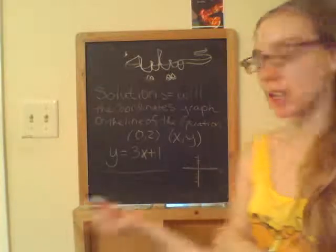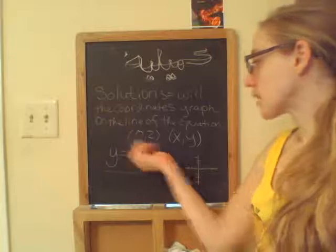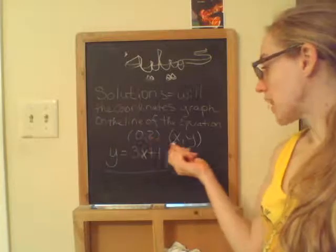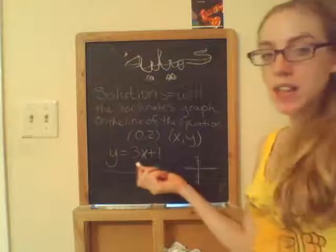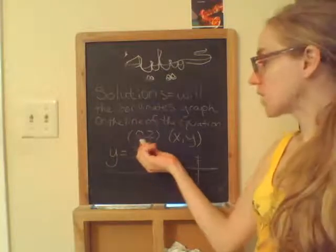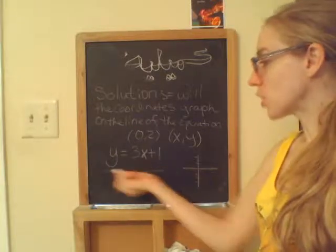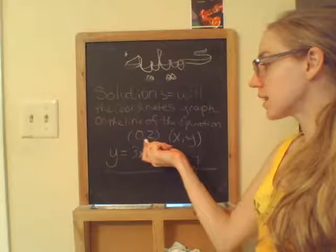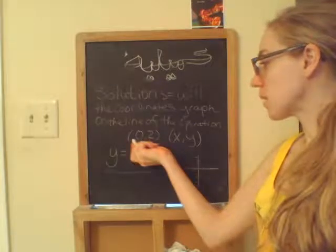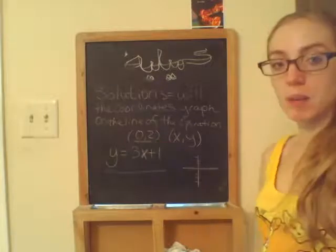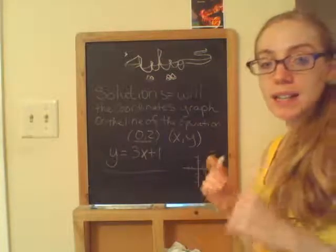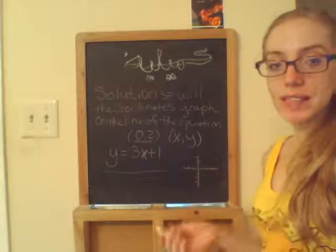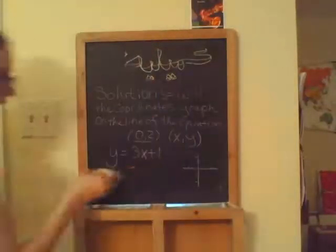I'll go into depth on that later. But basically, here is our ordered pair with our coordinates inside, and remember it's x, y. Remember the importance of which comes first. We have zero comma two. To find out if this ordered pair will be a point within this linear equation, we're going to plug in x and y and solve and see if it comes out as an answer.